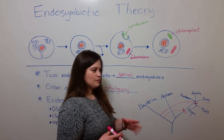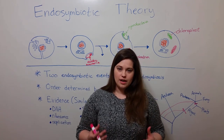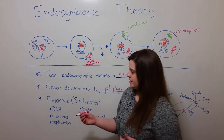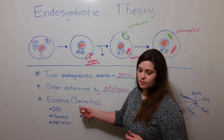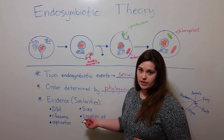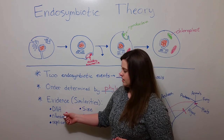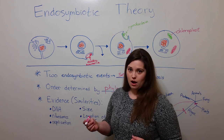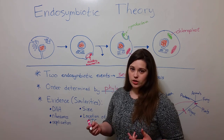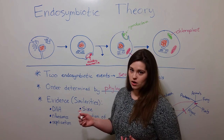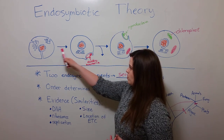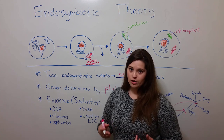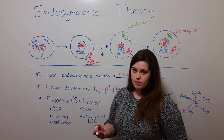Now let's look at some of the evidence for the endosymbiotic theory — why scientists think that these two organelles came from bacterial cells. It's because of how many similarities there are between the organelles and bacteria cells. For example, the DNA: eukaryotic cells have linear segments of DNA, whereas bacterial cells, as well as mitochondria and chloroplasts, have circular DNA. Remember that mitochondria and chloroplasts have their own DNA, and it is structurally similar to bacterial DNA.